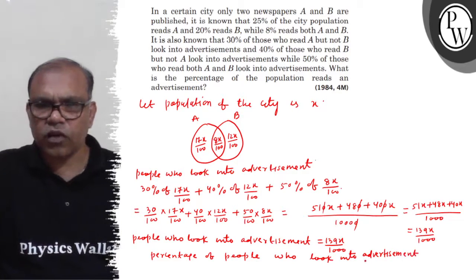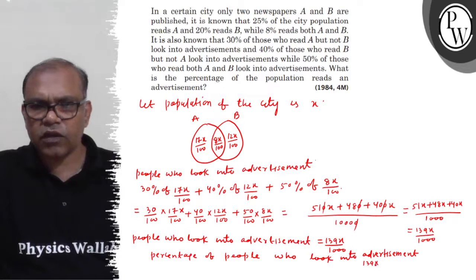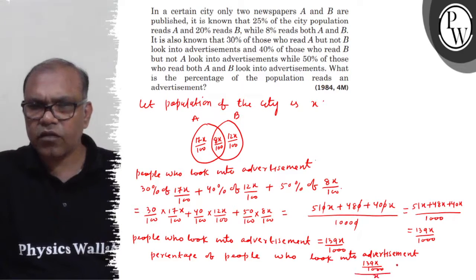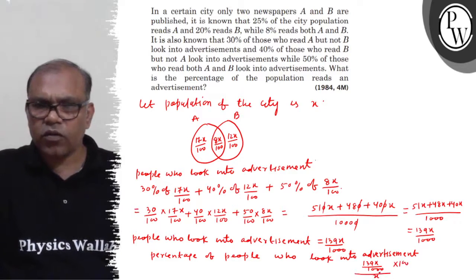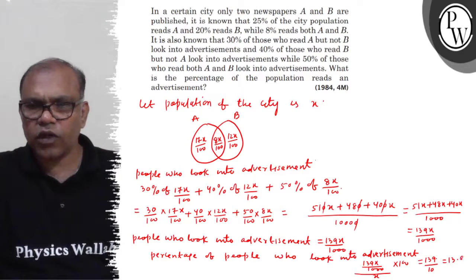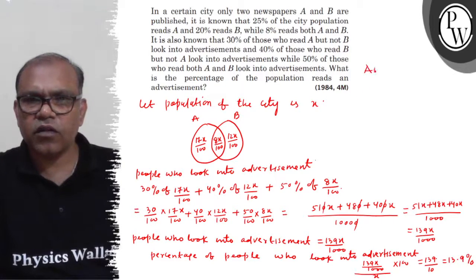The number of people who look into advertisements is 139X/1000. To find the percentage of the population, we calculate (139X/1000) divided by X, multiplied by 100. This gives 139X/10 = 13.9%. Your answer is 13.9%.